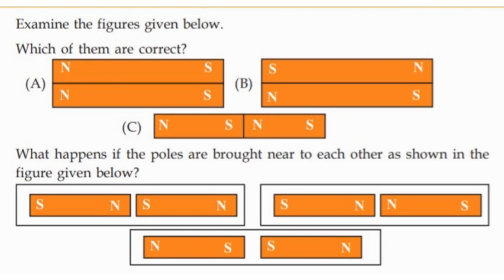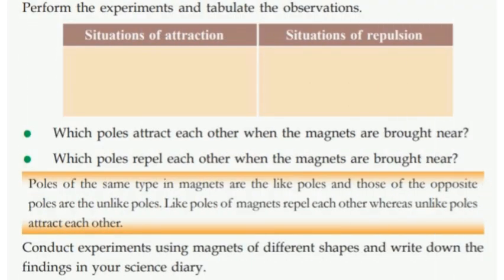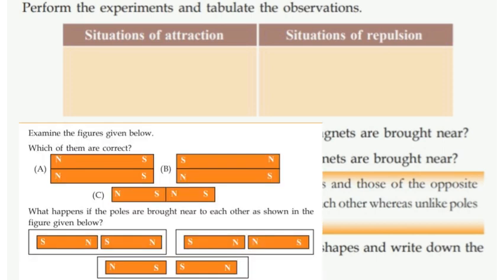What happens if the poles are brought near to each other, as shown in the figure given below? We have a few figures. South and North, South and North. We are looking at South and North and North and South — situations of attraction and situations of repulsion. S, N, S, N — that is attractive.